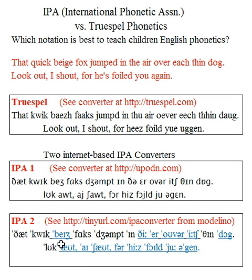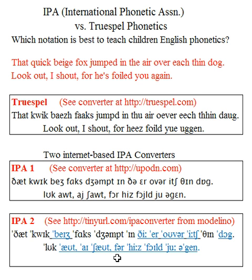All the words shown in blue differ from the IPA notation in IPA 1. IPA 2 reads 'that quick beige fox jumped in the' — using the long E sound, recognizing there's a vowel sound starting the next syllable — 'air over each thin dog, look out, I shout, for fur.' They recognize that 'for' is sometimes said 'fur,' which often happens in US English. 'He's foiled you again' — and it shows stress on the second syllable.